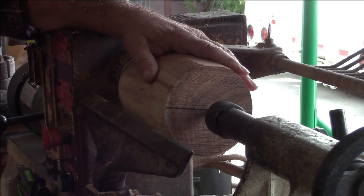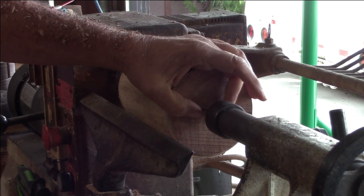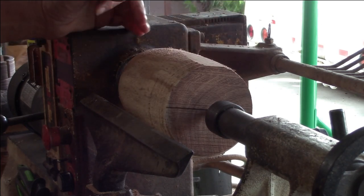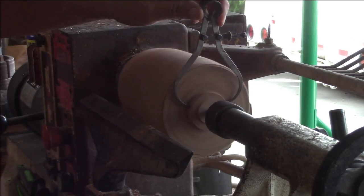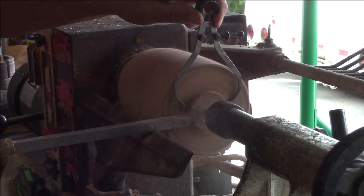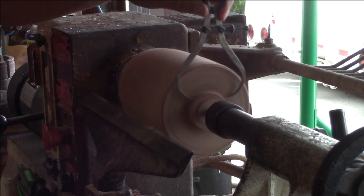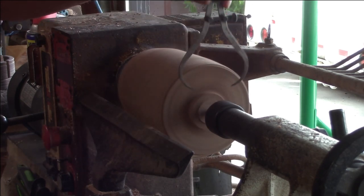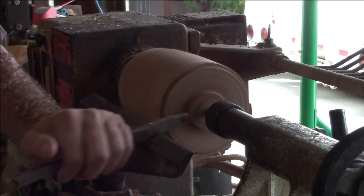So now I've gotten it nice and round and I'm going to create a tenon on here. That tenon will be used to go into a chuck that I have. I'll show you that here in just a second. That's the size of the tenon, I'm just using a caliper. I'm using a carbide tool, it's faster for me.